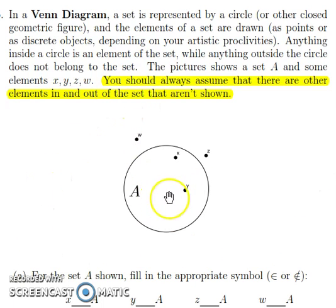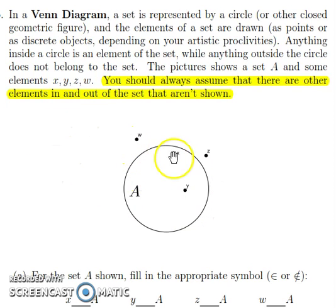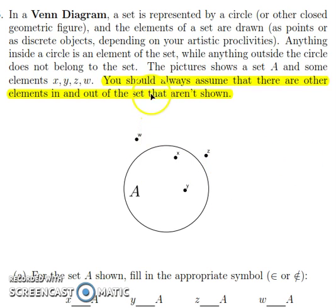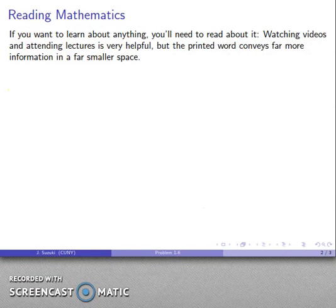What that means is: if I draw a set, I have to assume there are elements on the outside, and there are elements all over the inside of the set as well. The elements I draw in aren't all that there are — we should always assume there are other elements that we're not drawing in every place that they can be, and this has some important implications.